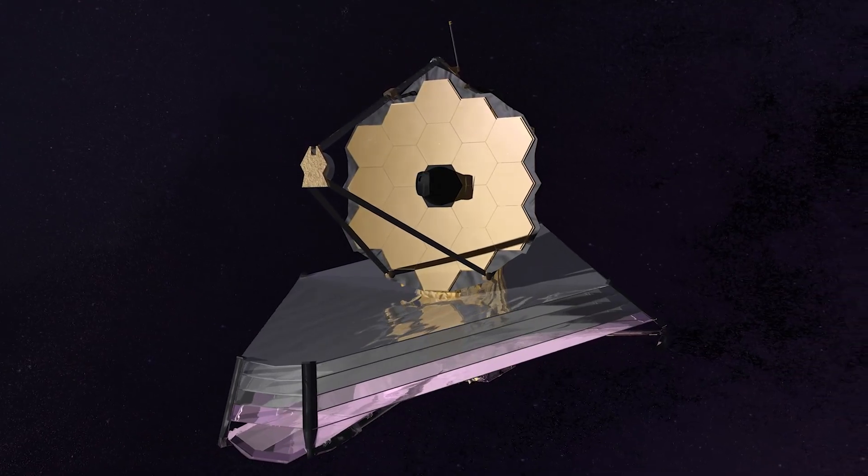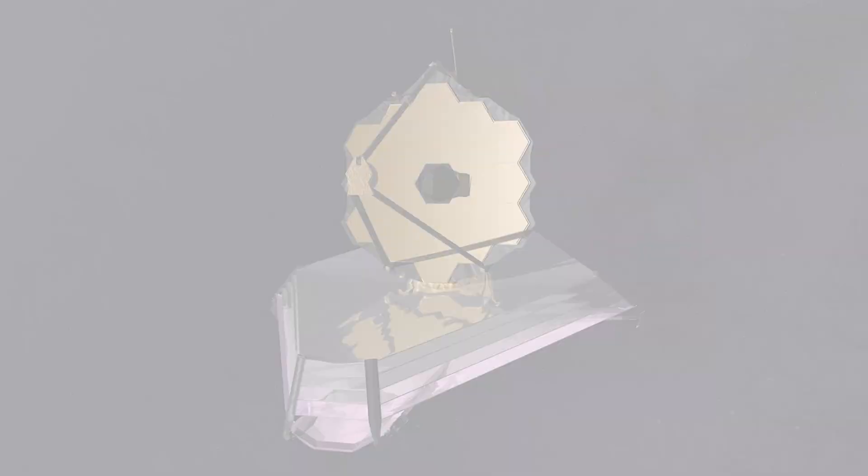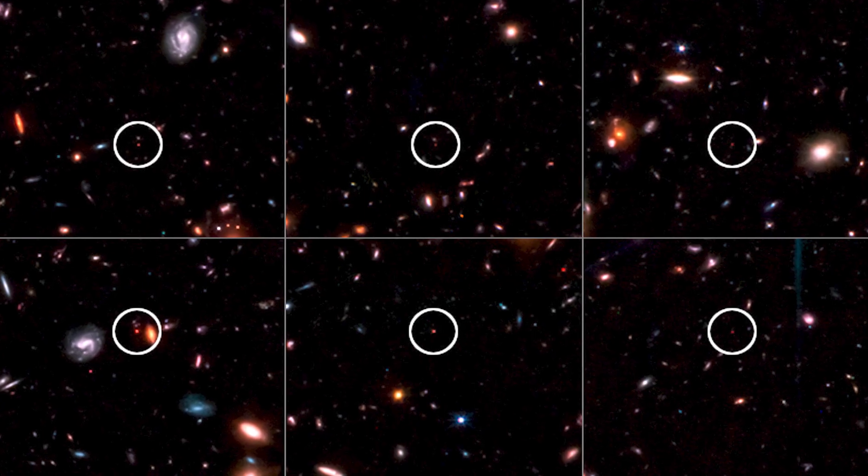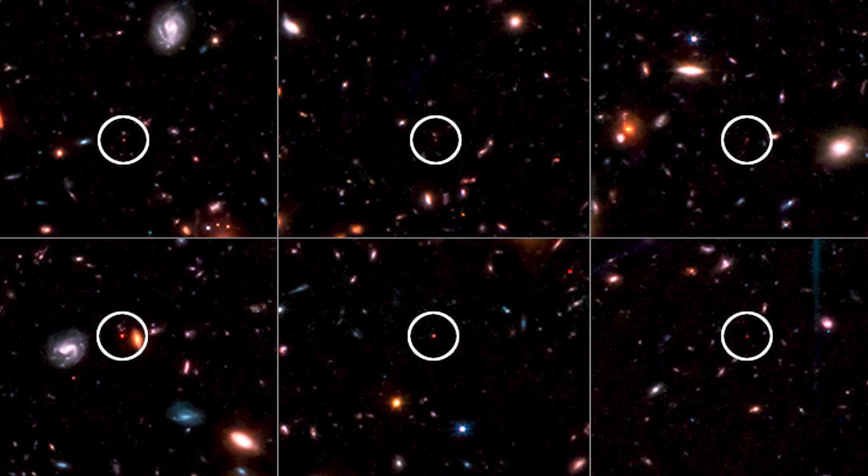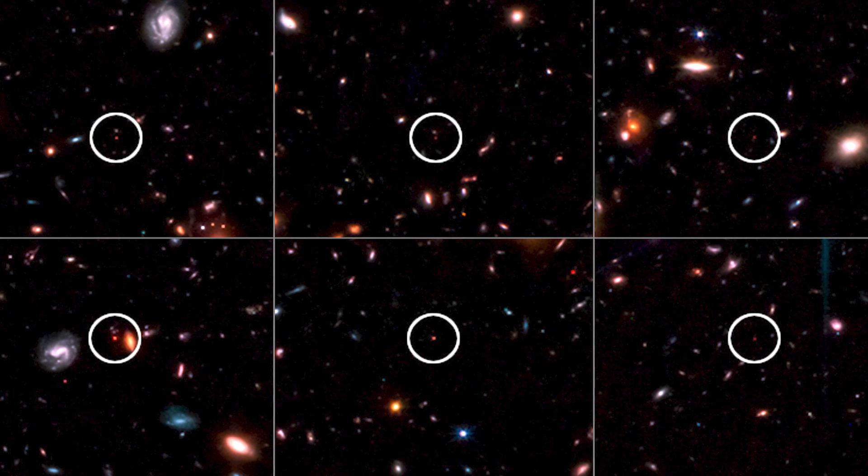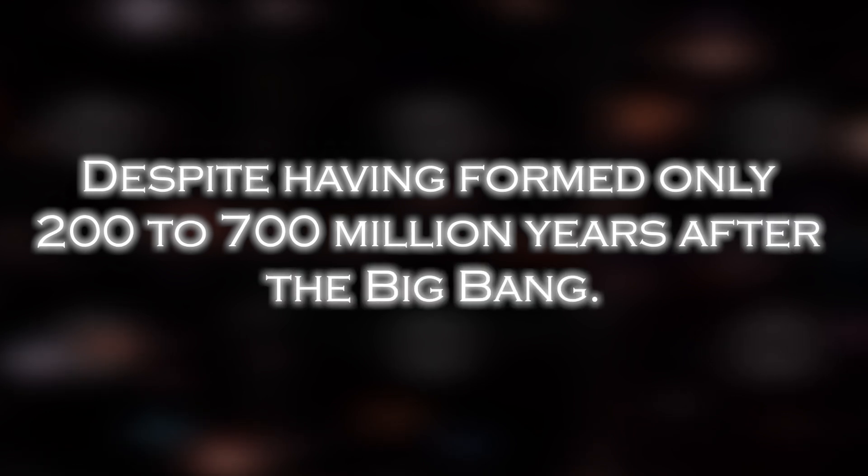The James Webb Space Telescope has revealed the discovery of six massive galaxies dating back to the earliest times of the universe. Each of these galaxies contains more stars than our own Milky Way, despite having formed only 200 to 700 million years after the Big Bang.